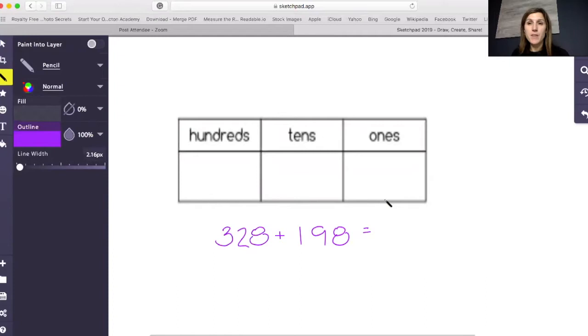So when I'm adding on the place value chart, no matter if I have two digits, three digits, four digits, however many, I always put my add-ins on the place value chart.